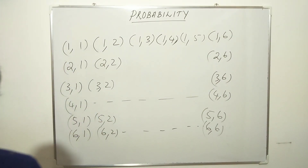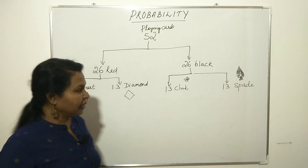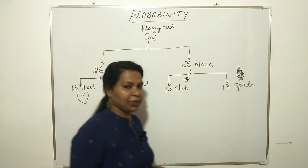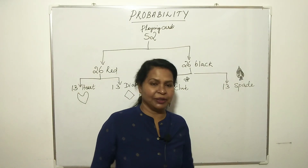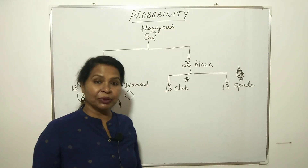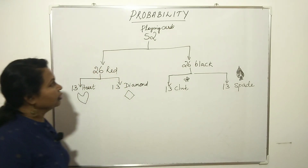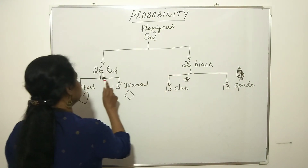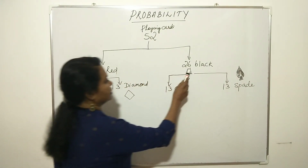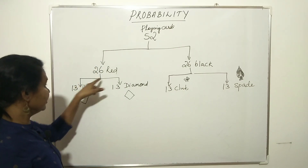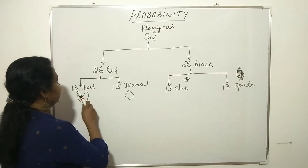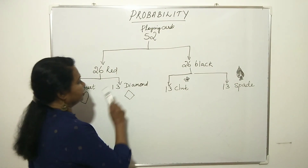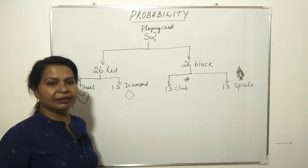Now let's discuss the playing cards. There are a total of 52 cards. These 52 cards are divided into two groups: 26 red color and 26 black color.